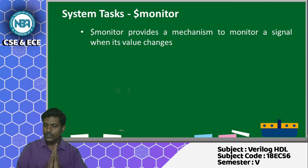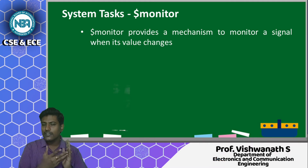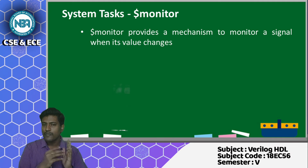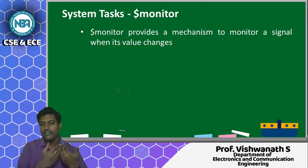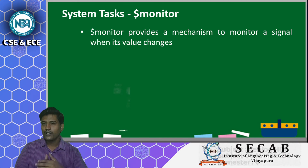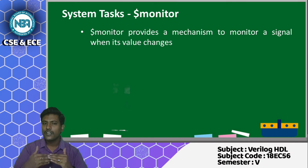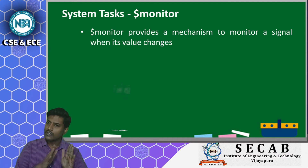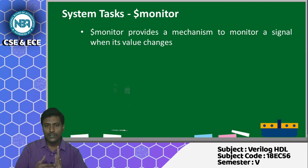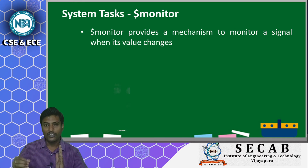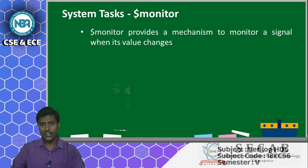For example, with $display("id of the port is %b", port_id), the statement executes only when called. If you replace $display with $monitor, then every time port_id changes value, that display statement is executed. This is the main difference: $display executes only when explicitly called, while $monitor executes whenever the monitored variable's value changes.